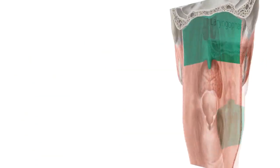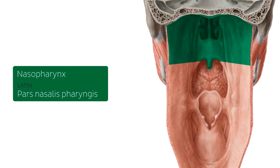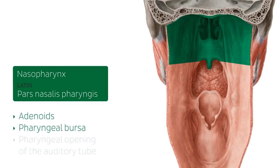The nasopharynx, highlighted in green, is located on the posterior part of the nasal cavity behind the conchae. It is the uppermost portion of the pharynx. Structures found here include the nasopharyngeal tonsils — also known as the adenoids — the pharyngeal bursa, and the pharyngeal opening of the auditory tube. The nasopharynx communicates with the nasal cavity via the nasal conchae and also with the oral cavity via the pharyngeal isthmus.